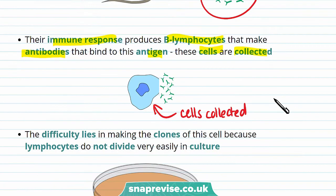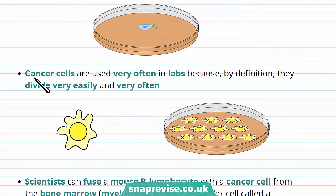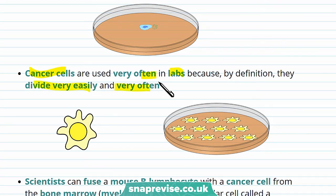The difficulty lies in making clones of the cell, because lymphocytes don't divide very easily in culture. So to get around this problem we use cancer cells. These are used really often in labs because by definition they divide really easily and very often. So this is a cancer cell and as you can see it's growing very quickly.